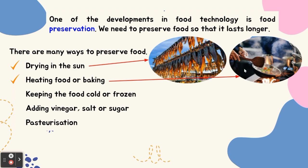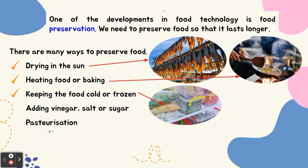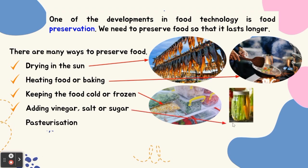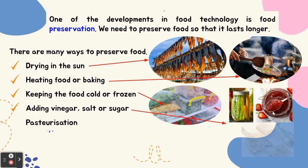Third, keeping the food cold and frozen — for example, frozen food in the refrigerator. Fourth, adding vinegar, salt, or sugar — salt is added to make dry fish.